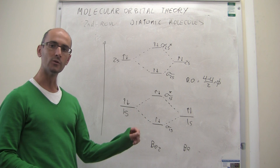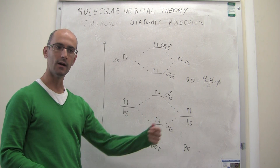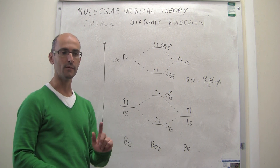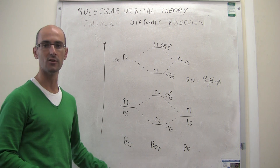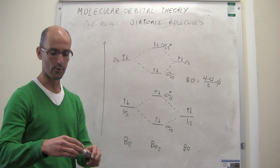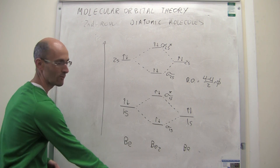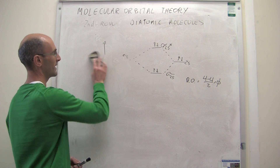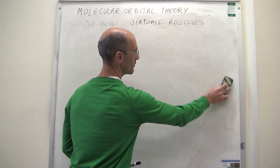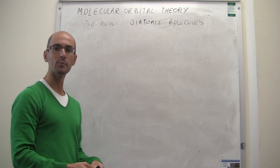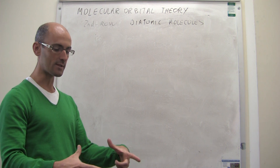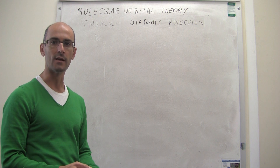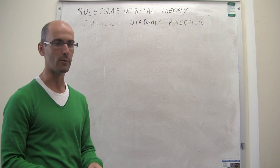Next, we're going to continue down the second row and think about boron, carbon, and so forth. The diagram is going to change a little bit because when you have boron, carbon, and beyond, you have electrons in p orbitals. The electronic configuration involves occupation of the 2p orbitals, and we'll have to talk about how these 2p atomic orbitals mix to generate bonding and antibonding orbitals, much as we have done for the s orbitals.